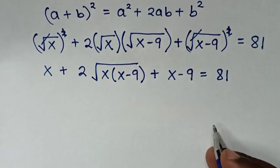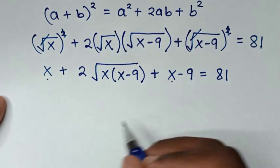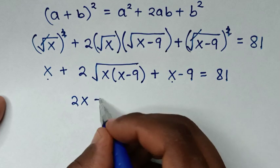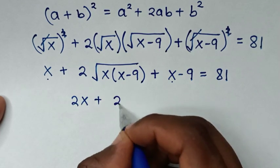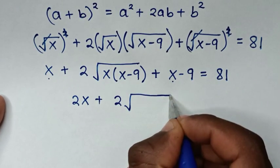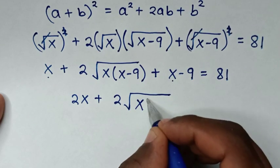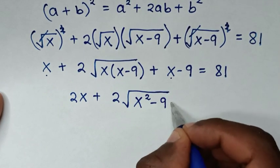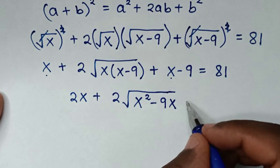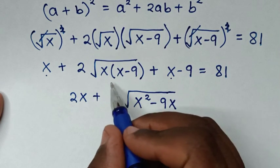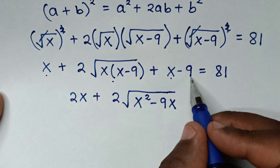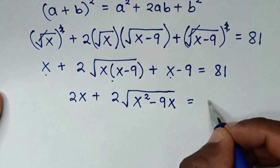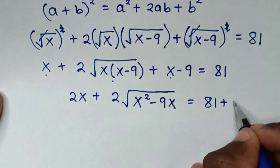In the next step, x plus x is 2x. Then we expand: x times x is x squared, and x times negative 9 is negative 9x. The constant negative 9 is moved to the other side, giving 81 plus 9.